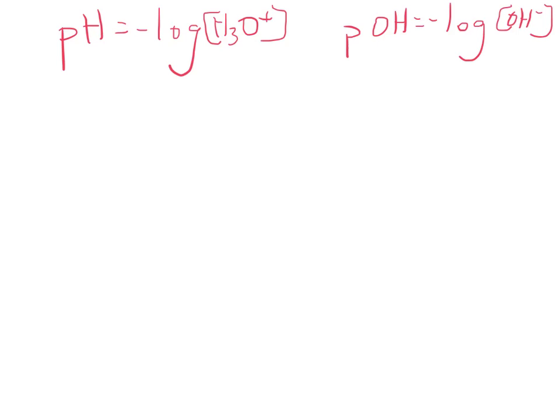Alright, so then you can also go backwards, go reverse, and find H3O+. If you have pH, the inverse of log is 10 to the power of, so that's 10 to the power of the negative pH. Or OH- is 10 to the power of negative pOH.